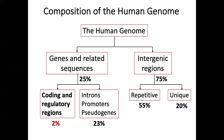In contrast, the coding sequences of more than 20,000 human genes only comprise about 1% of the genome. About the same genome share can be assigned to their regulatory sequences, making them about 2% in total.